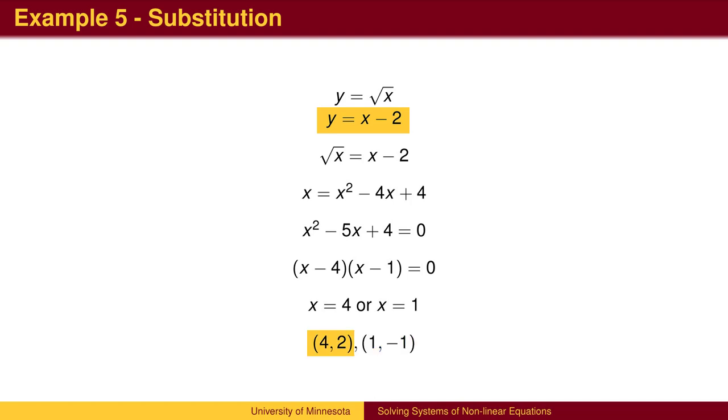However, only one of them is correct. If we plug x equals 1 into the first equation, we get y equals 1, not negative 1. What happened is that on the third line, when x equals 1, we have 1 equals negative 1, which is false. But when we squared both sides, we lose the negative sign. We need to discard the incorrect solution.